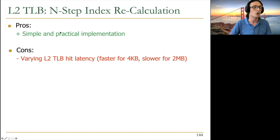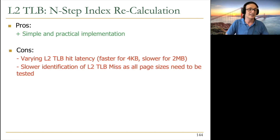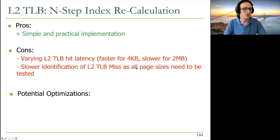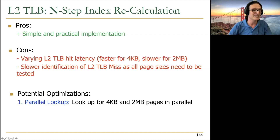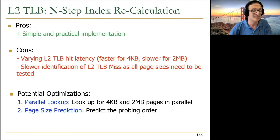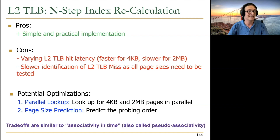The general algorithm is to recalculate the index and probe the TLB for all remaining page sizes. The downside is that TLB hit latency is longer and variable, and identification of an L2 TLB miss is slower. You can optimize by parallelizing lookups at hardware cost, or by predicting the page size — the trade-offs are similar to associativity in time versus space.